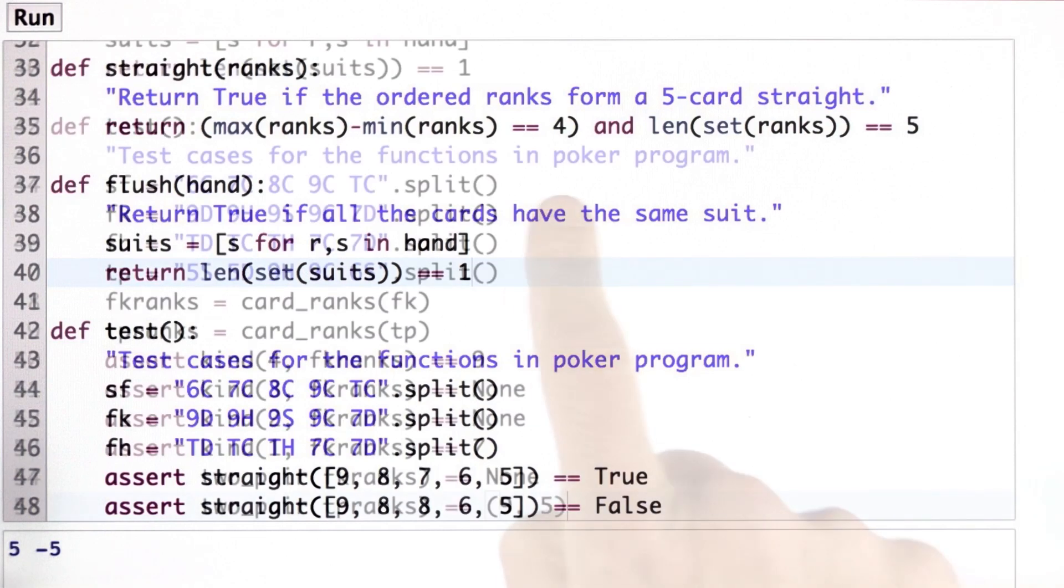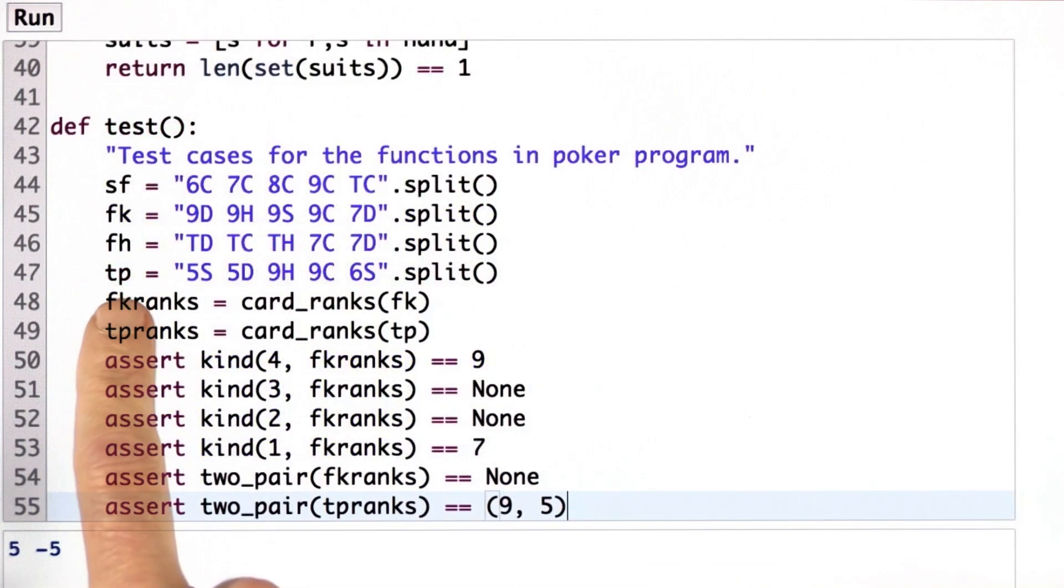And again, I'll do the tests for you. So what I've added here is one more card, or one more hand to deal with, two pairs. A pair of fives and nines with a six left over. And then I pulled out the ranks of four of a kind ranks and two pair ranks by calling card ranks.